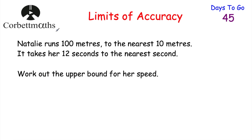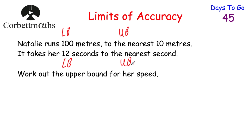Let's have a look at our next question. Natalie runs 100 metres to the nearest 10 metres, and it takes her 12 seconds to the nearest second. Work out the upper bound for her speed. Feel free to press pause now to try this question. So I'm going to start by finding the lower bound and upper bound for the distance ran, and likewise the lower bound and upper bound for the time taken. Let's find the lower bound and upper bound for the distance first.